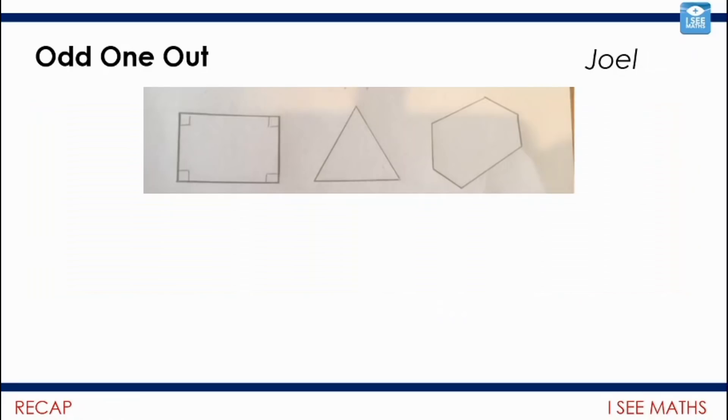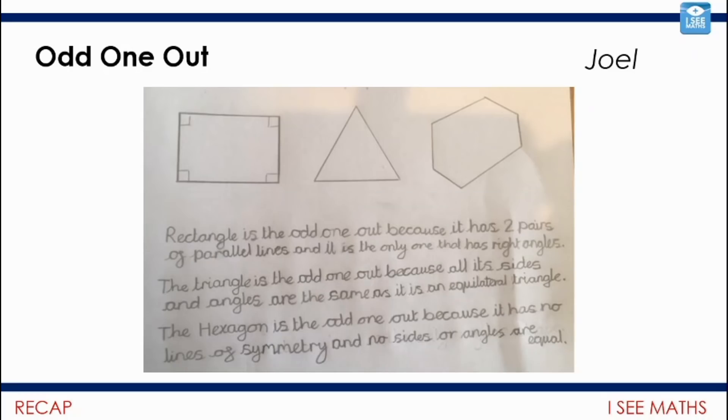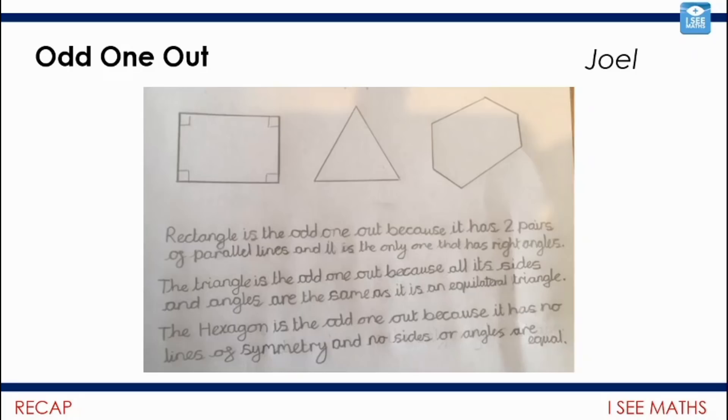And again we had this one from Joel. And again I'm going to talk you through this one and then we'll have a go at some. So, love the examples here from Joel. We've got rectangles with two pairs of parallel lines. The equilateral triangle—all the angles and sides are the same length. Whereas the hexagon could be the odd one out—it hasn't got any lines of symmetry for example. Have a go at this one though from Emma. We've got four shapes and why is each one the odd one out? Pause the video and have a go. Well fortunately for me, Emma gives us some solutions. So the circle hasn't got any corners. The square has only got right angles. The triangle has got one line of symmetry—I think it must be an isosceles triangle. And then the pentagon has no lines of symmetry. Love that example Emma.